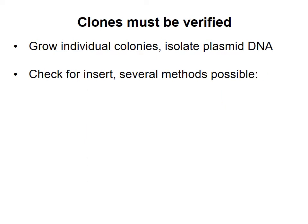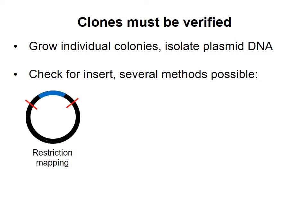There are several ways to check transformed colonies to see whether they contain a plasmid with the insert. In each method, you would grow up a culture of the colony and isolate plasmid DNA from the cells. One way to check for the insert is called restriction mapping. You cut the plasmid with particular restriction enzymes, then run the products on a gel and check their sizes. Since you know the sequence of the plasmid, you can predict how big the fragments should be, and tell whether an insert of about the right size has been added.